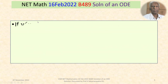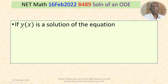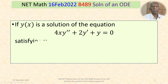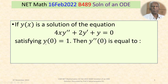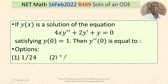The problem is: if y(x) is a solution of the equation 4x·y'' + 2y' + y = 0, satisfying y(0) = 1, then y''(0) is equal to what?